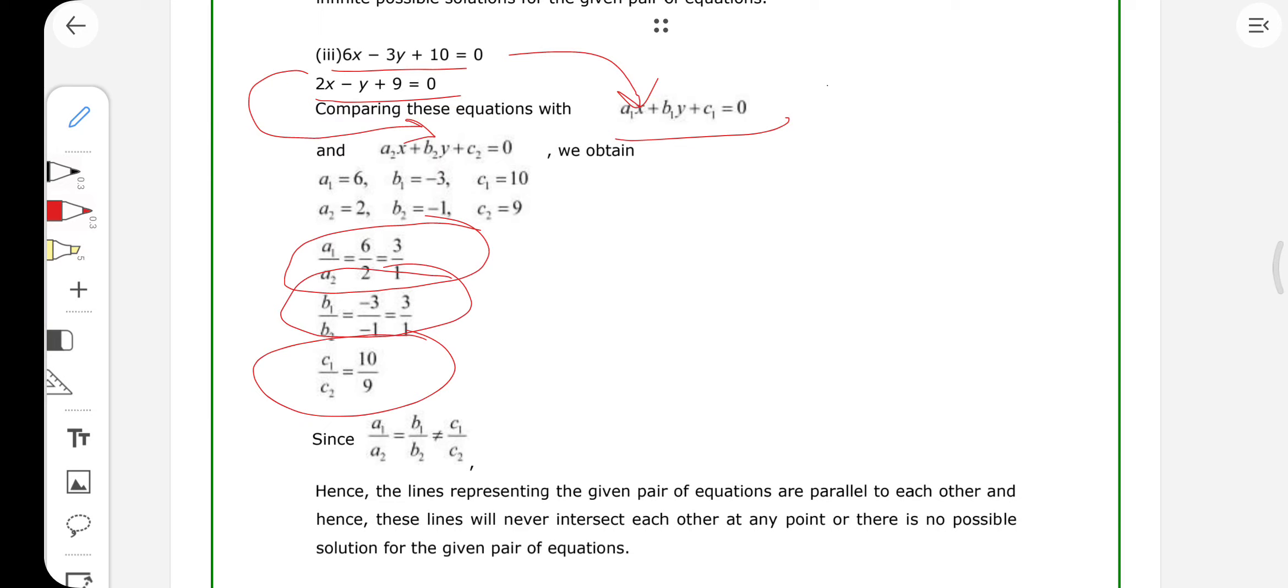Since we have a relation similar like this, a1 upon a2 equals b1 upon b2, this one equals 3 to 1. But c1 upon c2 equals 10 to 9, that is not equals to 3 to 1.